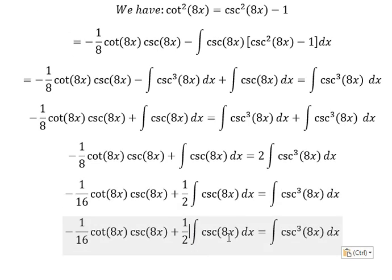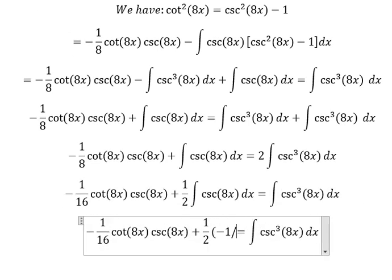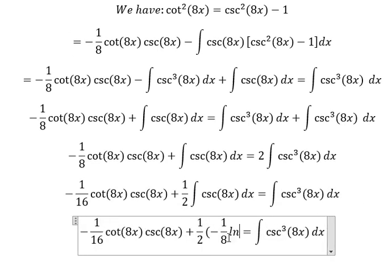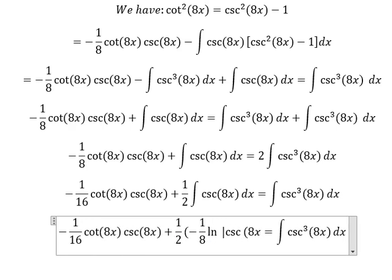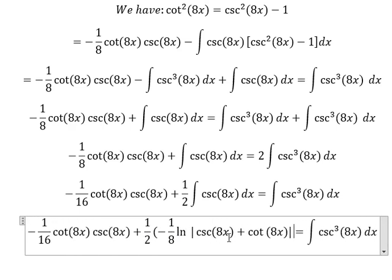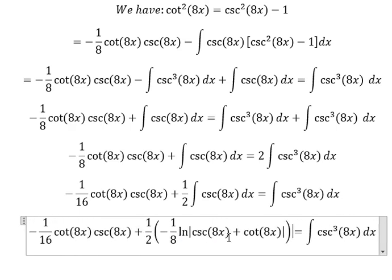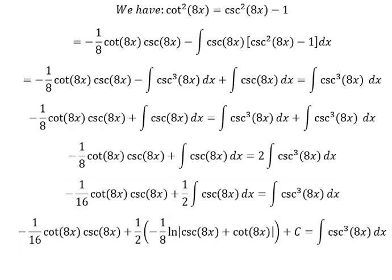The integration of this one gives us negative (1/8)·ln|csc(8x) − cot(8x)|, and then we add C, the constant. This is the final answer. This is the end — thank you for watching.